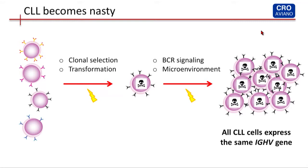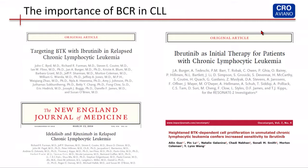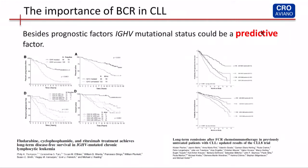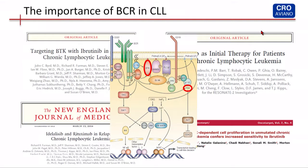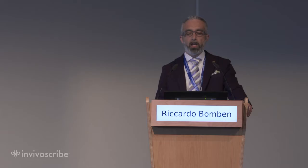This slide underlines the fact that a single CLL cell after clonal selection and transformation through BCR signaling and microenvironmental interaction creates the disease, and all the CLL cells express the same identical IGHV gene. The importance of this gene is not only related to its role as a prognostic factor, since it's very important in the context of new therapy — the BCR pathway key molecules such as BTK or PI3-kinase delta are very important for this pathway.